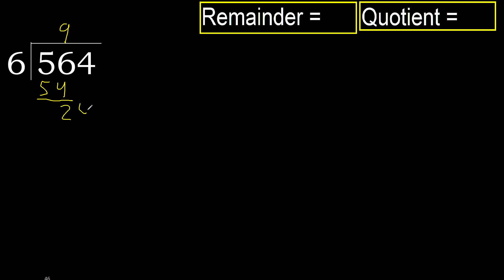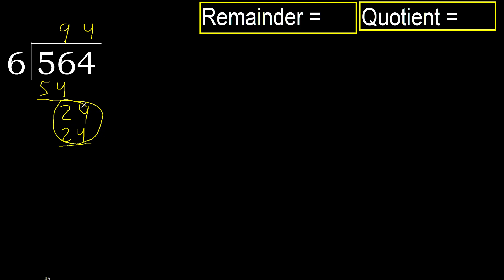Next: 24. 6 multiplied by 5 is 30, which is greater. 6 multiplied by 4 is 24, which is not greater. Okay. Subtract: 24 minus 24 equals 0.